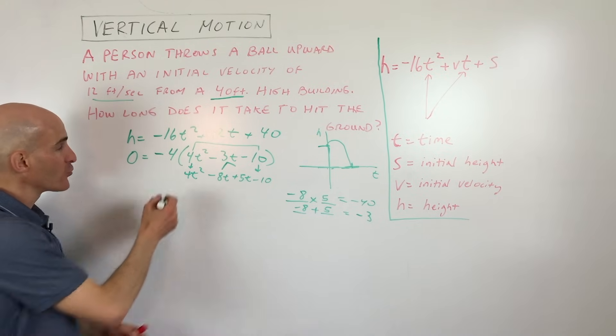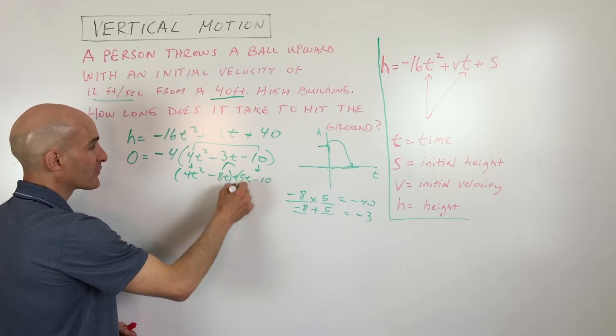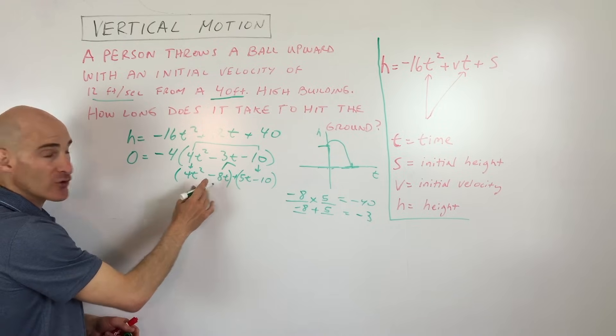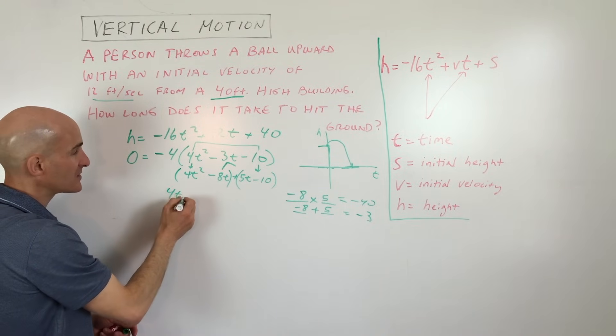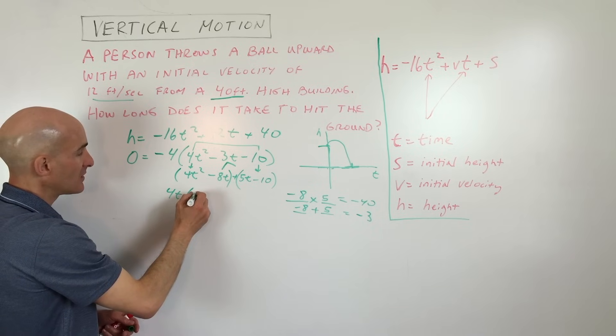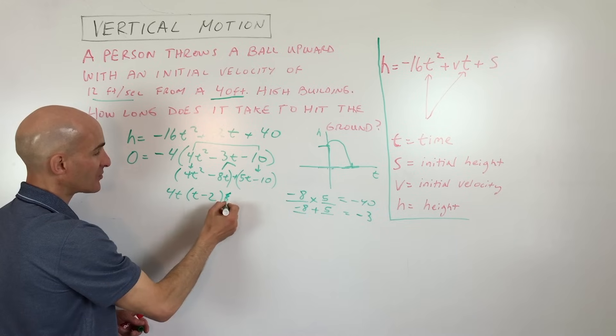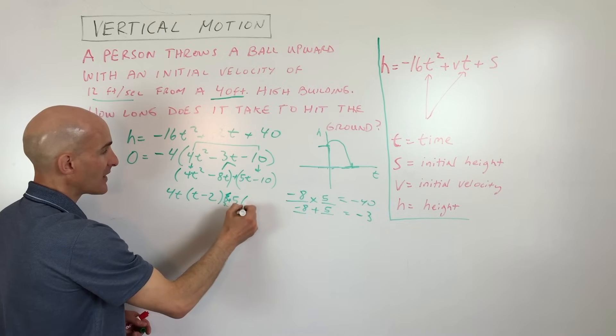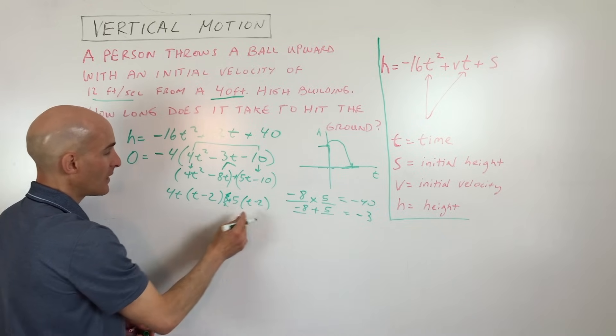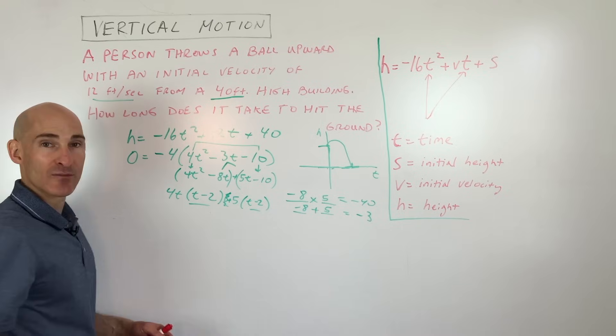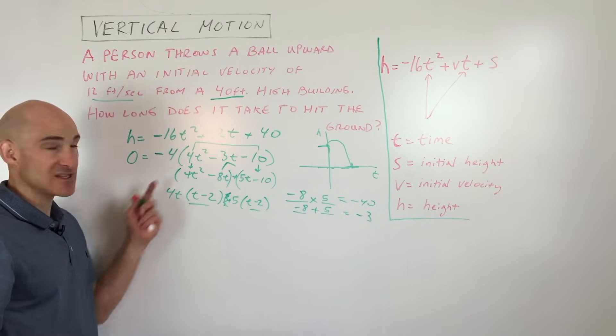And now we're going to factor by grouping. So I'm grouping the first two, grouping the last two, factoring out the greatest common factor. So that's going to be 4t. That's going to leave us with t minus 2. And if we factor out the greatest common factor here, 5, that's going to be t minus 2. And you can see there's a t minus 2 in common in both those groups. We're going to factor out the t minus 2.